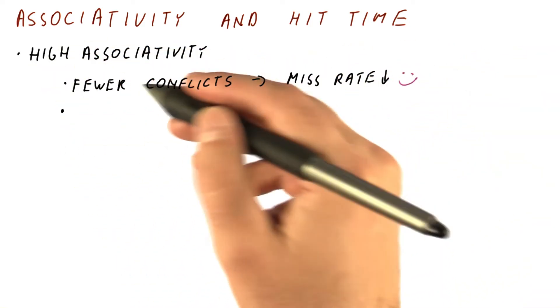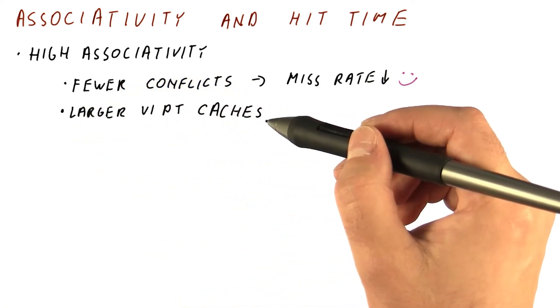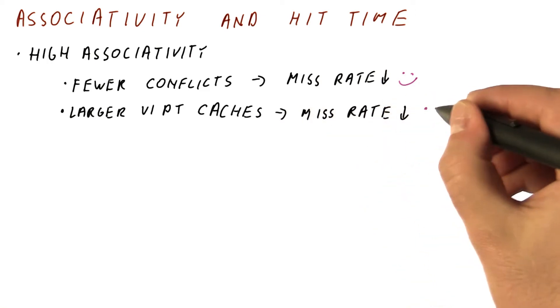With high associativity, we can build larger virtually indexed physically tagged caches, which reduces the miss rate, and we like that too.